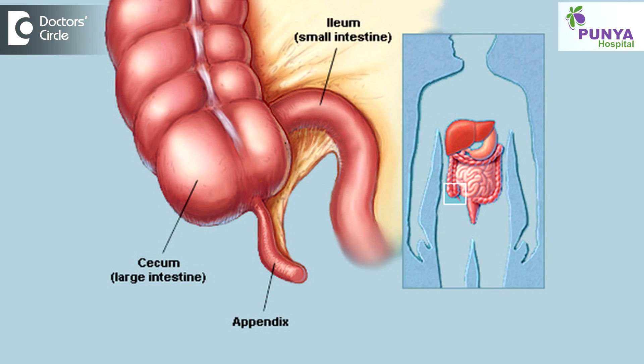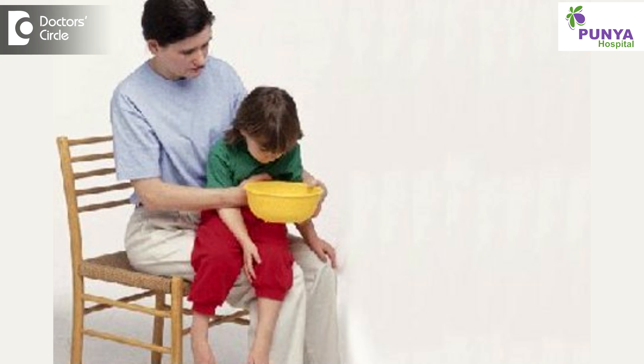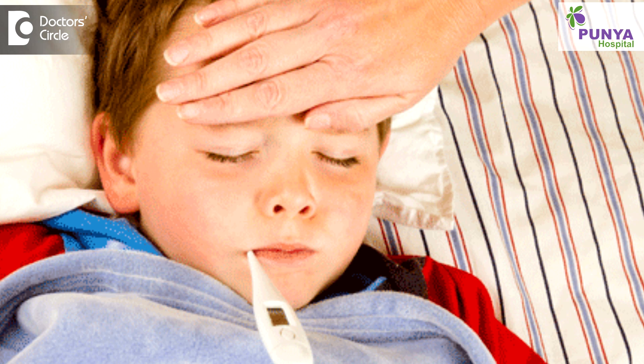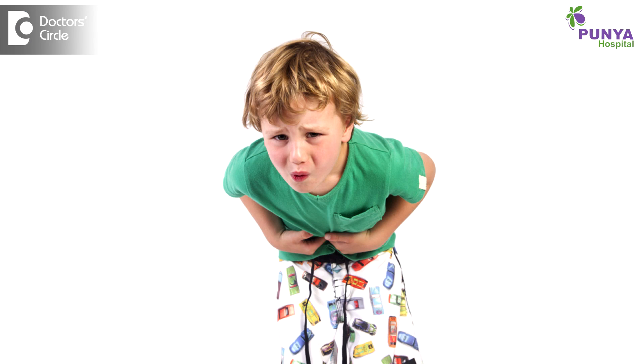Appendicitis usually presents in teenage children. The main cardinal symptoms of appendicitis are pain abdomen, vomiting and fever. The first to start with is usually pain abdomen, which will start in the upper abdomen, go down to the peri-umbilical — that is in the middle of the abdomen — and finally settle in the lower part of the right side of the abdomen where the appendix is located.